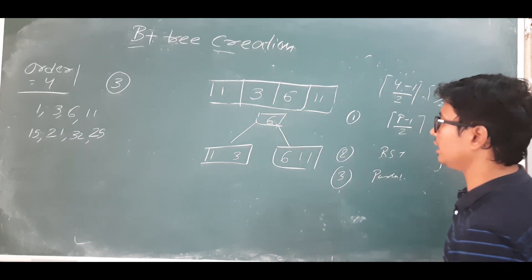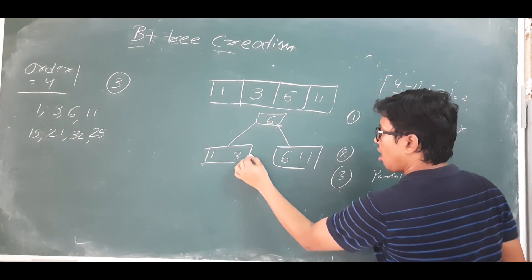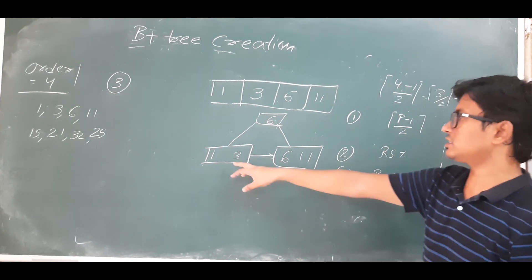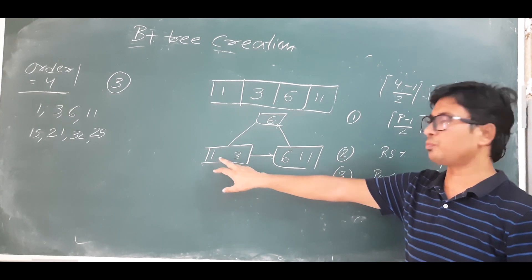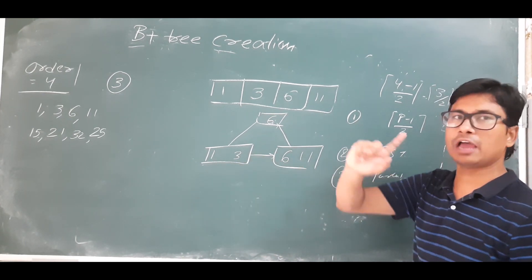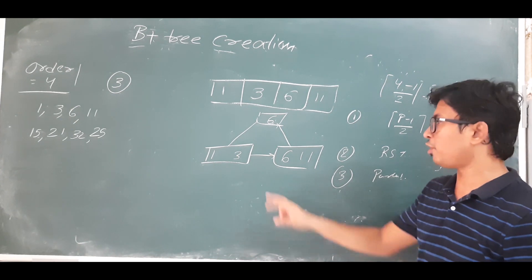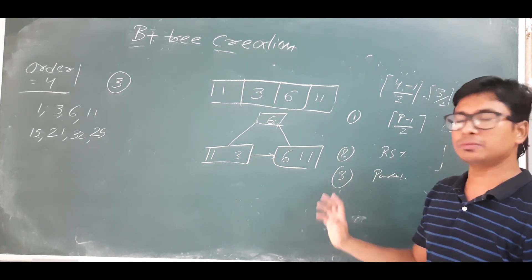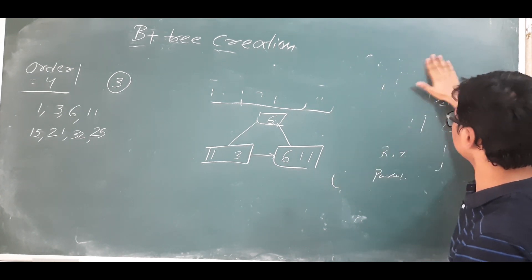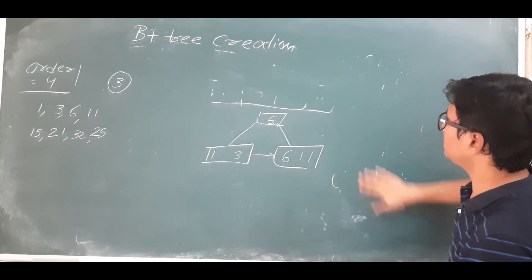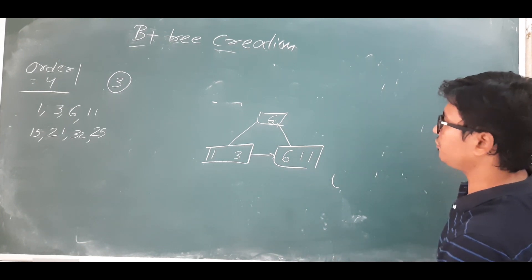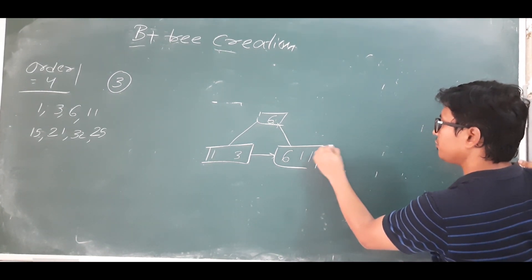With four elements inserted, all the leaf nodes should be connected. The structure consists of key-record pointer pairs, and at the last we will have a single block pointer to connect with the siblings.